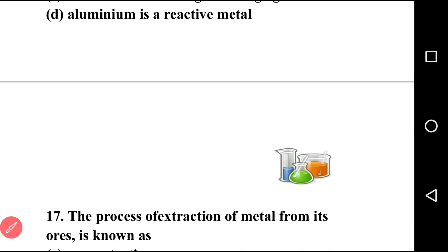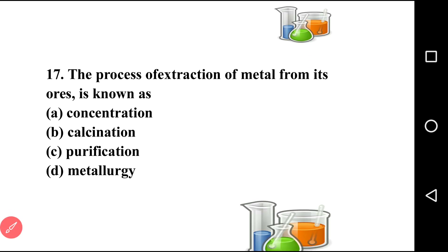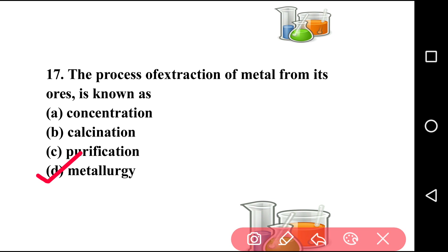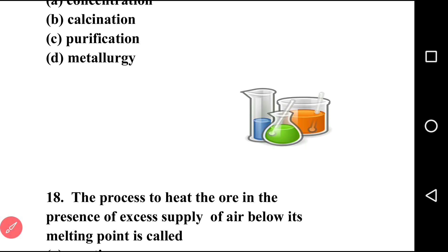Going to next question, question number seventeen: the process of extraction of metal from its ore is known as? Options: concentration, calcination, purification, metallurgy. The answer is option D, that is metallurgy. Metallurgy is the process in which we generally extract metal from its ore.